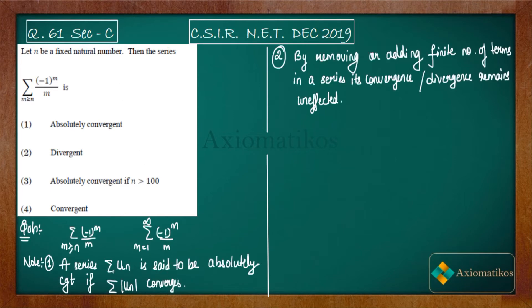This is the meaning of absolute convergence. We say we have a series—if we have a series like this, we call it absolutely convergent if the series summation |u_m| converges. So what we have is this.